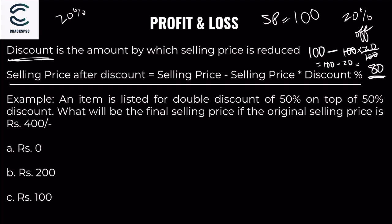Now for successive discounts — for example, an item listed with 50% then 50% discount. Many people think 50% plus 50% equals 100% discount, but that is not correct. 50% of 50% is 25%, so a 50% followed by 50% discount is equivalent to a 75% total discount.